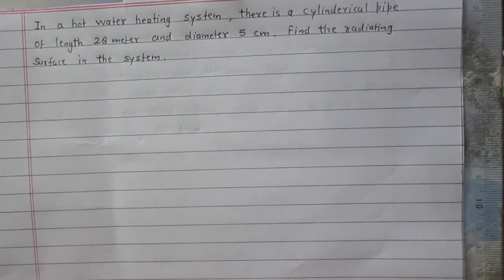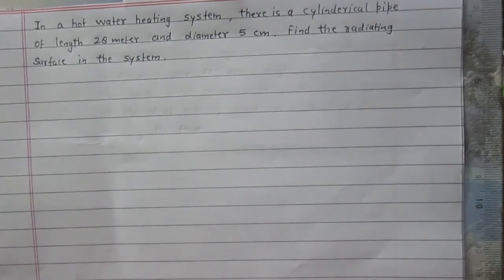In a hot water heating system, there is a cylindrical pipe of length 28 meter and diameter 5 centimeter. Find the radiating surface in the system.